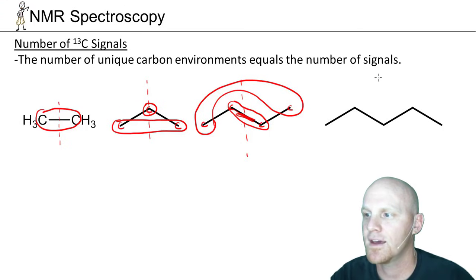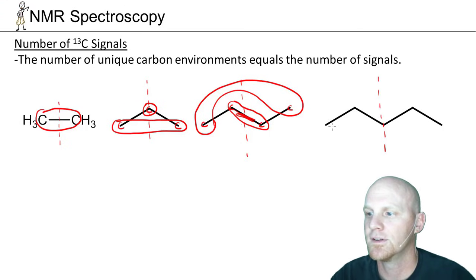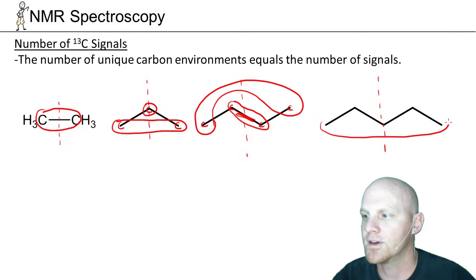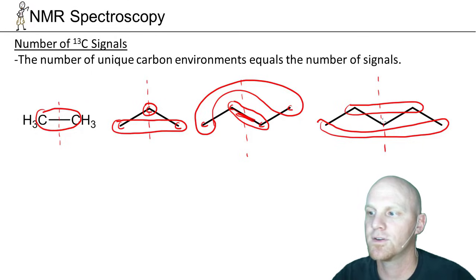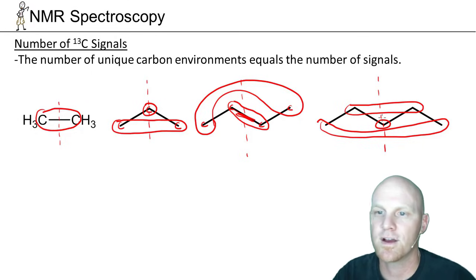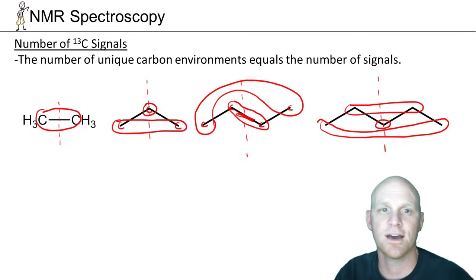Moving on to pentane, there is also symmetry right down the middle. The two end carbons are chemically equivalent and give rise to a single signal, the next two inward are chemically equivalent and give rise to a single signal, and finally there's a third signal for the middle carbon. So pentane will have three signals in the carbon-13 NMR spectrum.